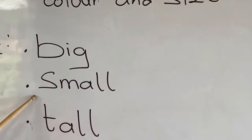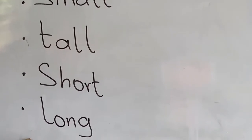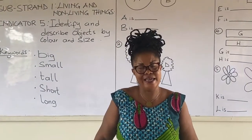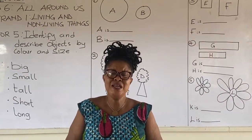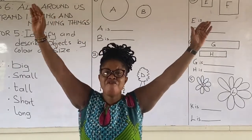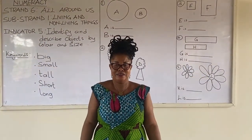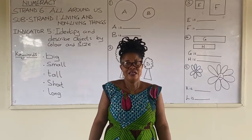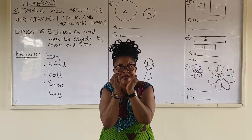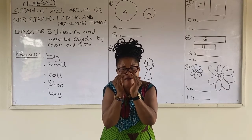Let's go over again: big, small, tall, short, long. What do we mean by the word big? Big is something very wide. In the other way around, small is very tiny or little — very small.